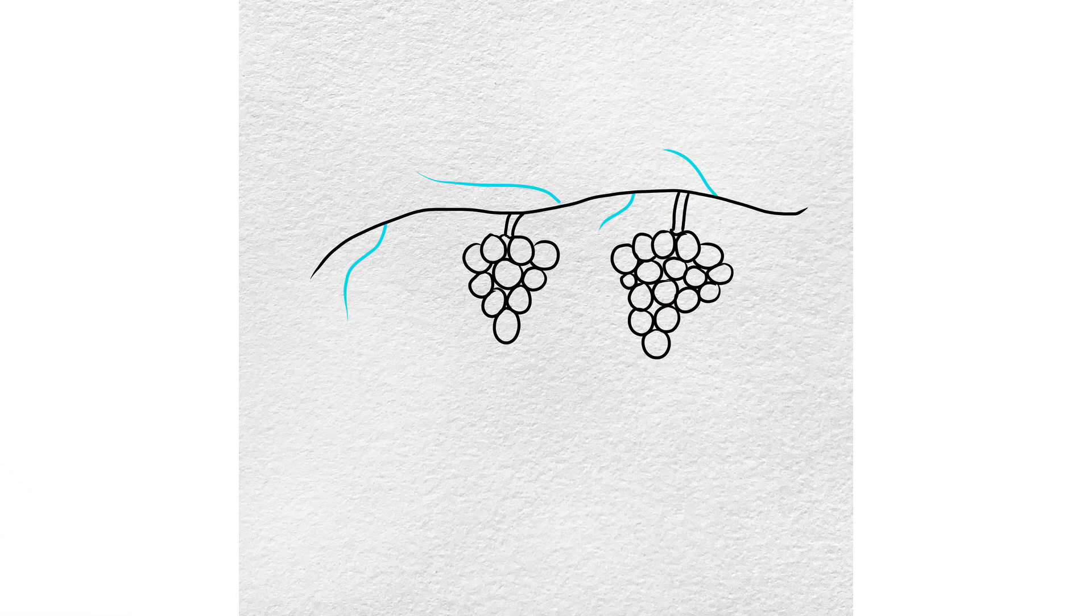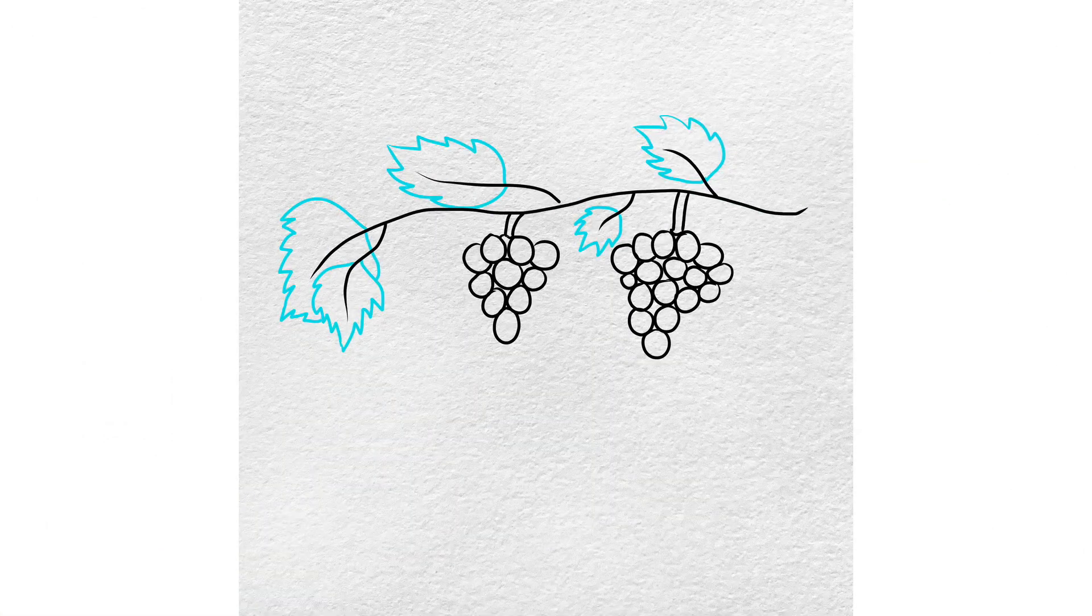After that, draw vines that will connect to your branch. Next, draw leaves on the top of the vines.